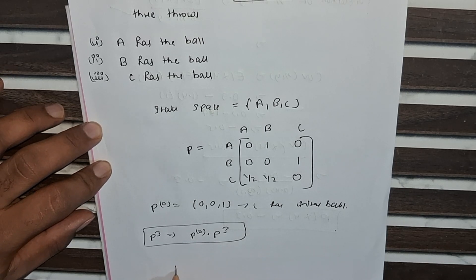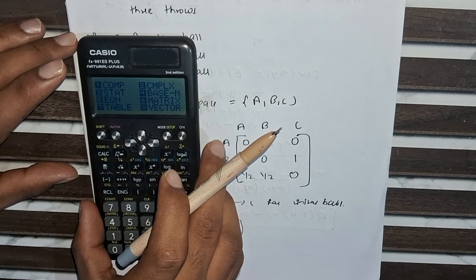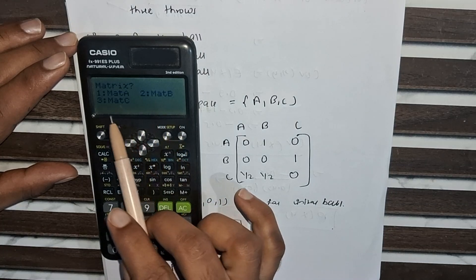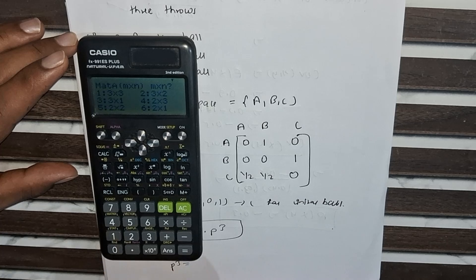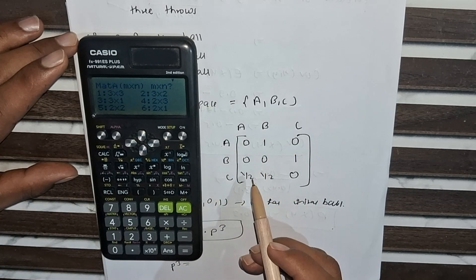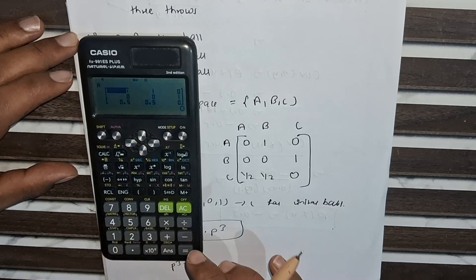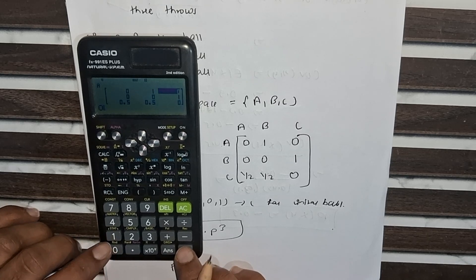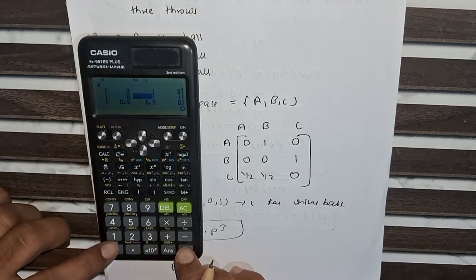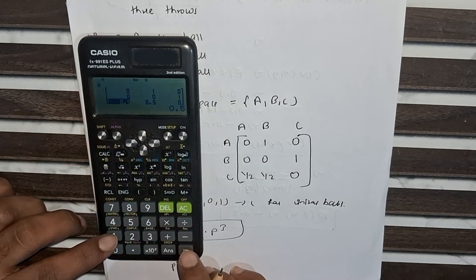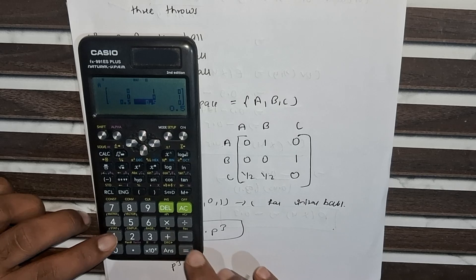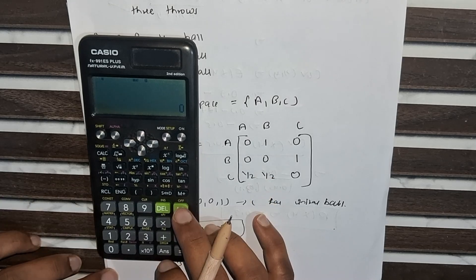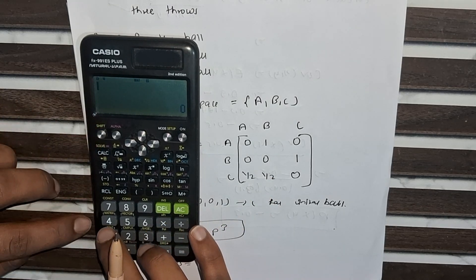To find P³, we use a calculator. Press Mode, then 6 for matrix, then press 6. Select matrix A — it is a 3×3 matrix, so press 1. Now enter the values: row 1 is 0, 1, 0; row 2 is 0, 0, 1; row 3 is 1/2, 1/2, 0. Press AC after entering all values.